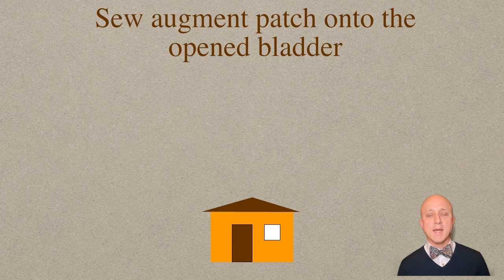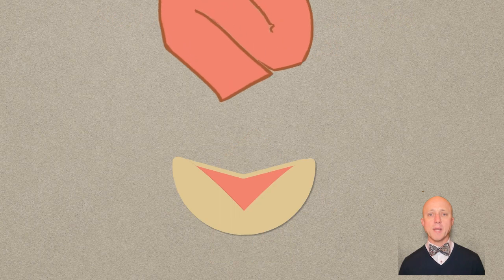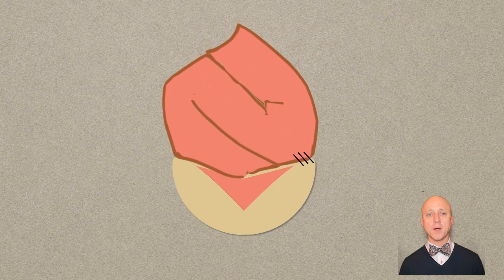Finally, we have to add the bladder augment onto the bladder. Again, this is like adding a much larger roof onto a small house. We sew this square patch of small intestine to the bladder to create our augment.